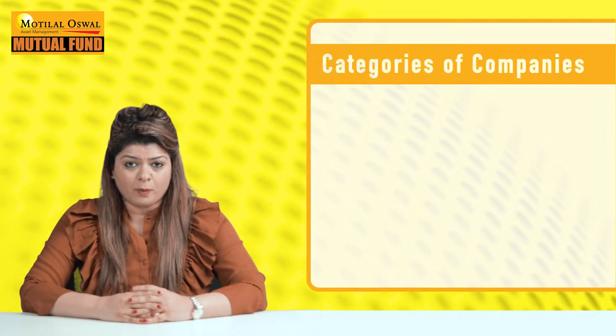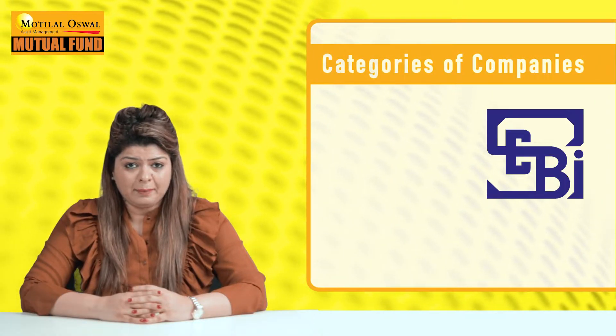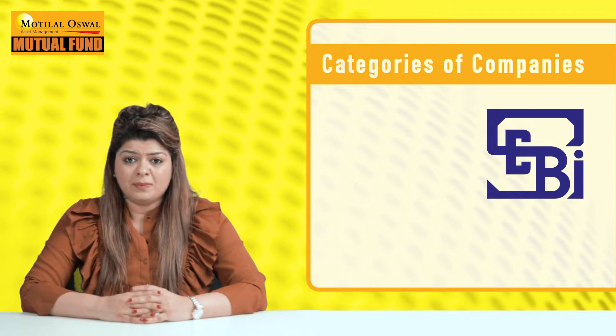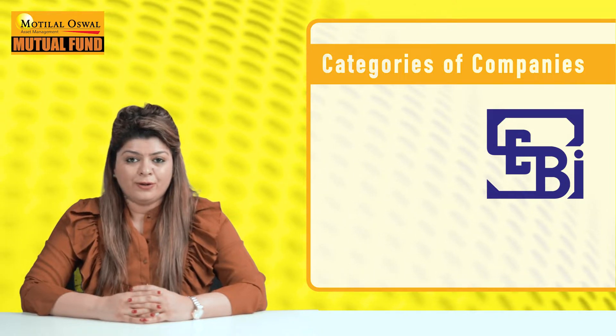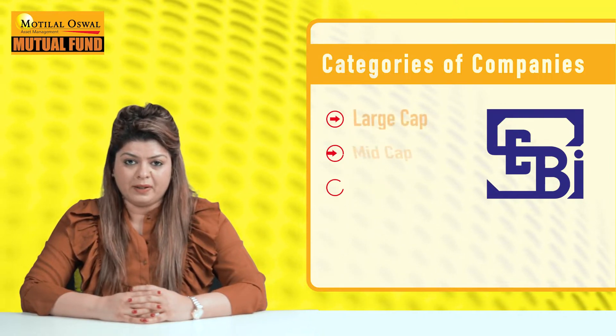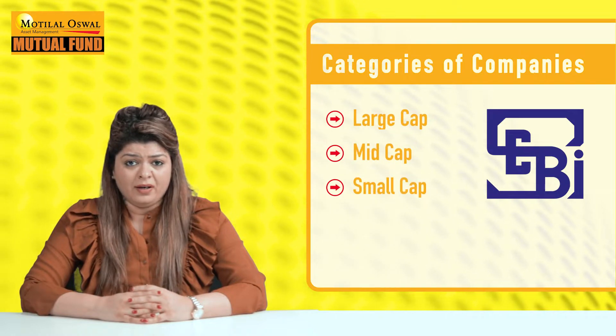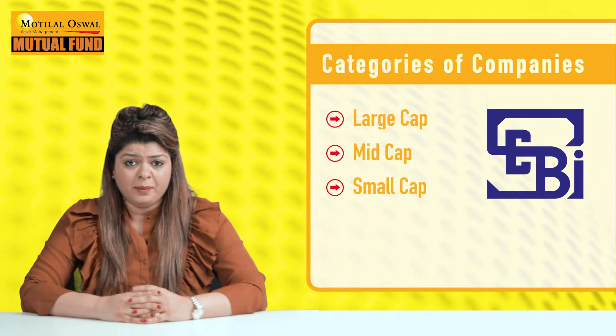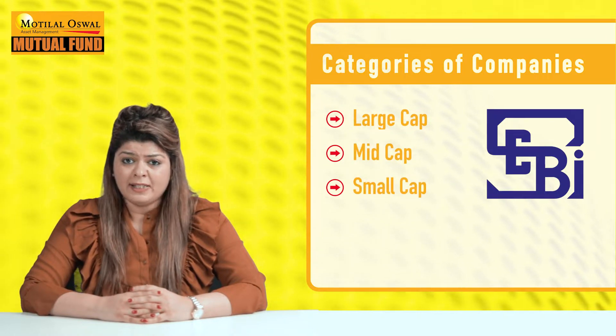Types of companies according to market cap: Listed companies are categorized into various groups considering their market capitalization. SEBI, the governing body, has made a rule to categorize companies according to their market capitalization. These categories are large cap, mid cap, and small cap.